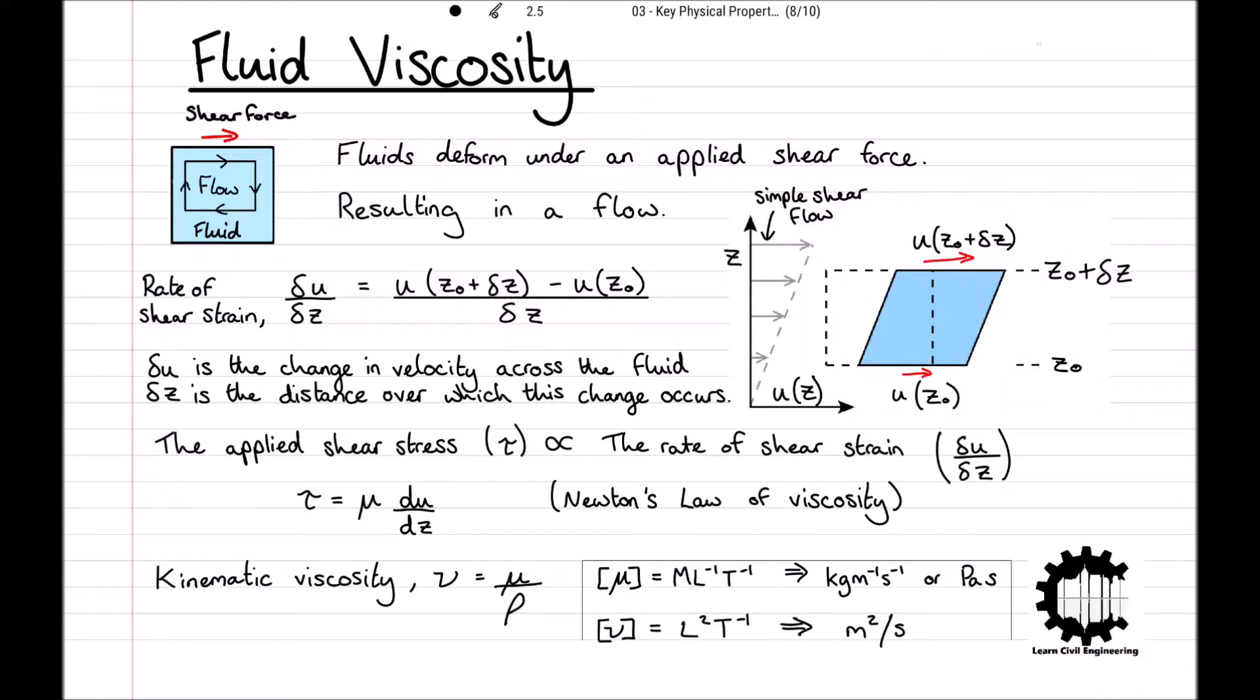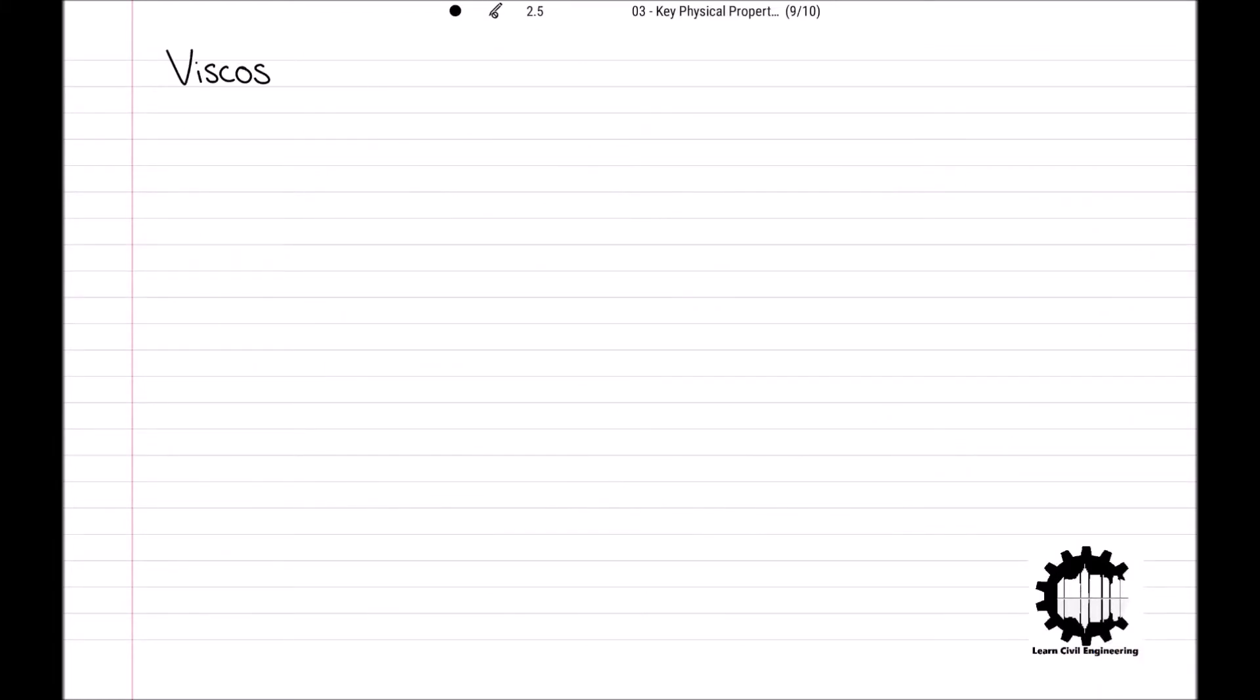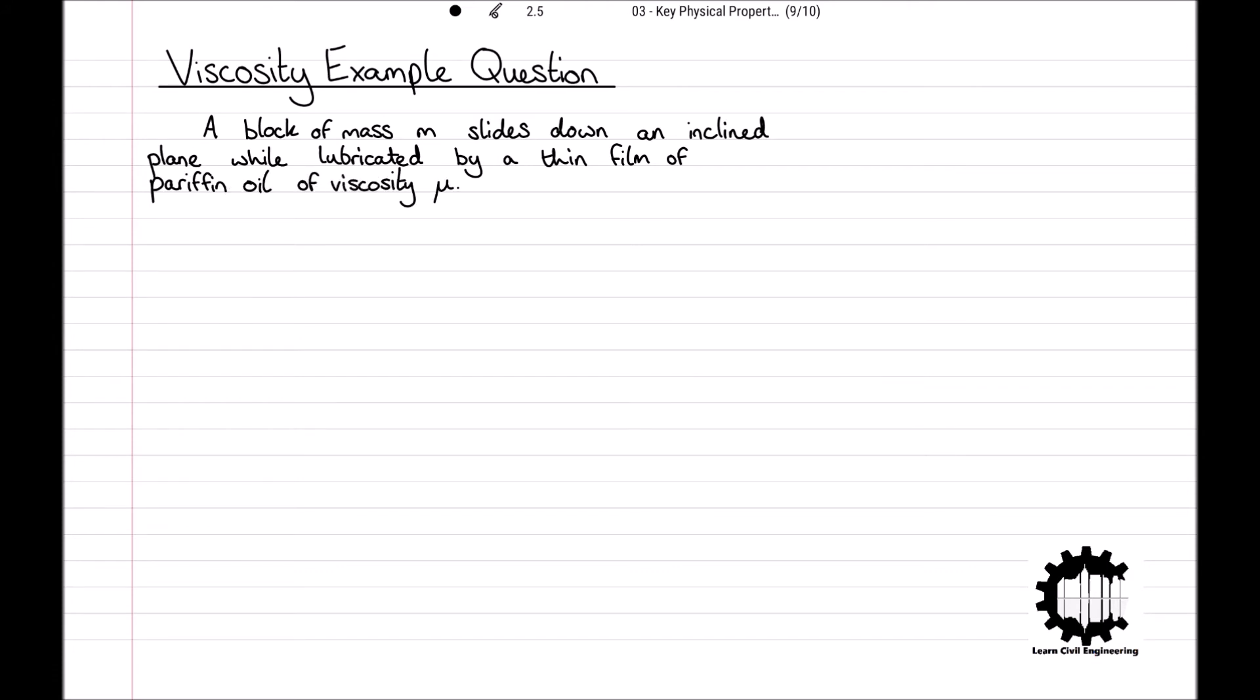So now that we've had a look at the theory behind fluid viscosity, let's have a look at an example question to test our understanding. A block of mass m slides down an inclined plane while lubricated by a thin film of paraffin oil with viscosity mu. The oil film has thickness delta z, which is assumed to be small here, and the base area of the block is A.